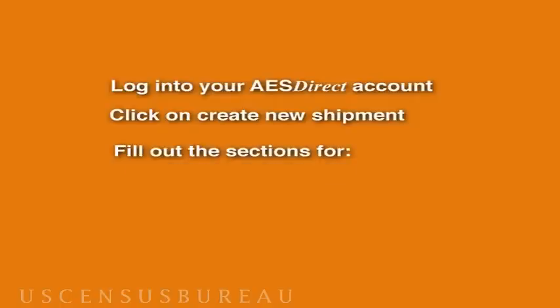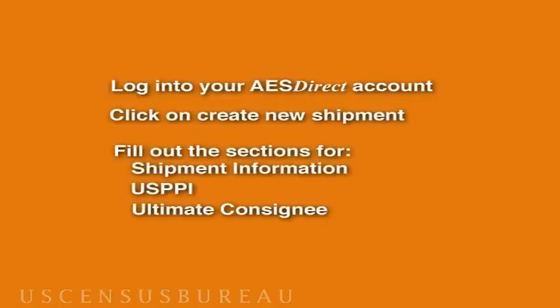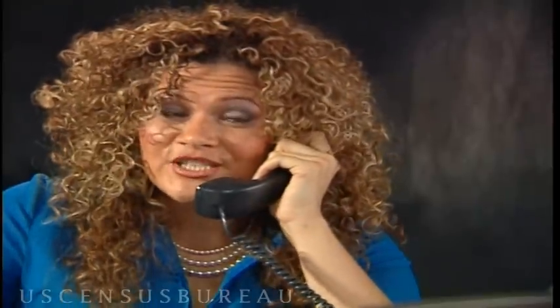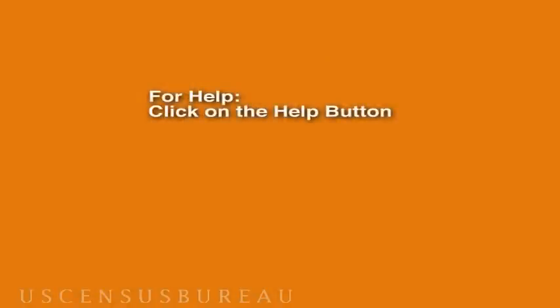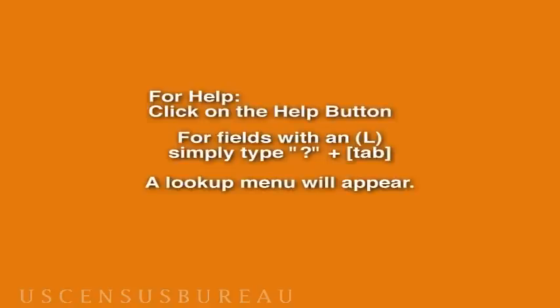Before you go, let me make sure I understand things. In order for me to file a shipment, I have to log into my AES Direct account and click on Create New Shipment. I have to fill out the sections for Shipment Information, USPPI, Ultimate Consignee, and Commodity Line. If I don't know some information, I can always click on the Help button, and for the fields with an L in parentheses, I can use the Question Mark tab lookup menu. Is that right? You got it!